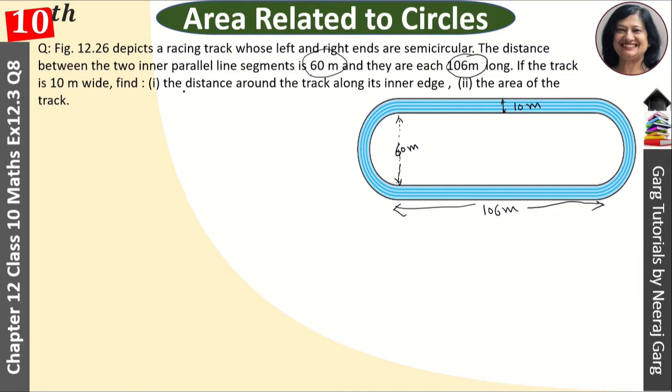The distance around the track along its inner side - let's name the points. This is point A, this is B, and this is C, and this is point D. So for the first part, this length AB and CD, both are 106. So twice into 106 plus...